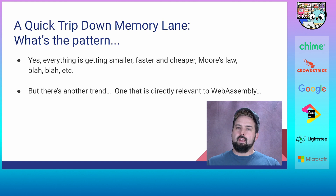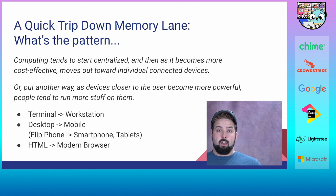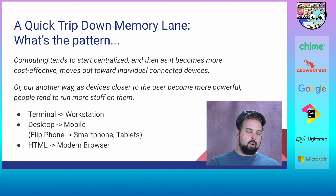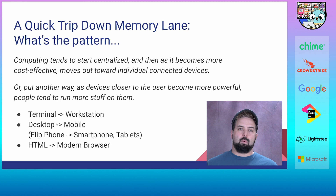So what's the pattern here? We know everything is getting smaller, faster, and cheaper — Moore's law and all that. But there's another trend: as computing power becomes cheaper and more efficient, it tends to move closer to the user. That gives us the transition from terminal to workstation, and from desktop to mobile phone. The computing that was on the desktop can now be done on the phone, so you put it in your pocket. Your phone is no longer just a phone — it's got a full operating system, computing power, memory, and a graphics processor.